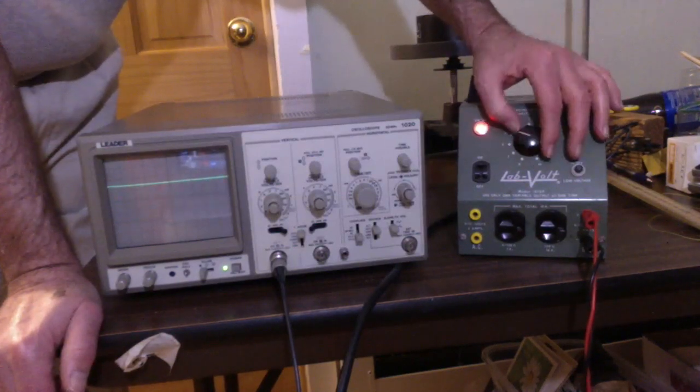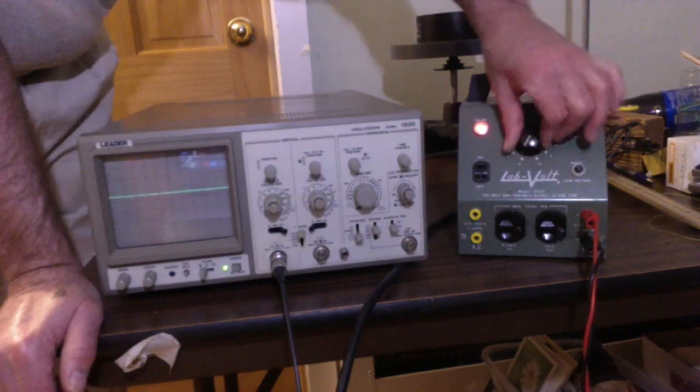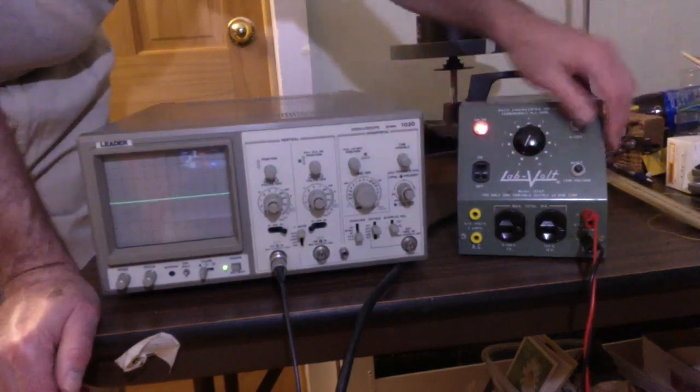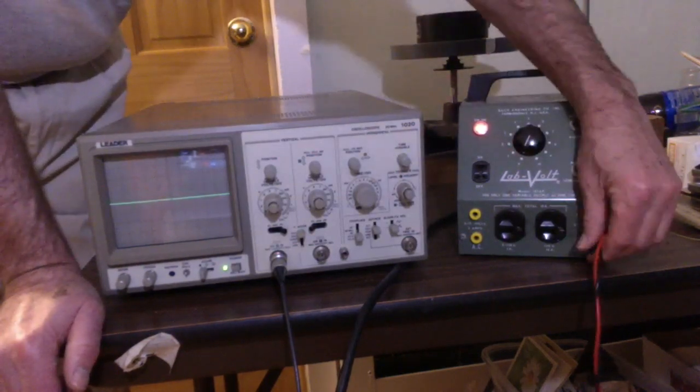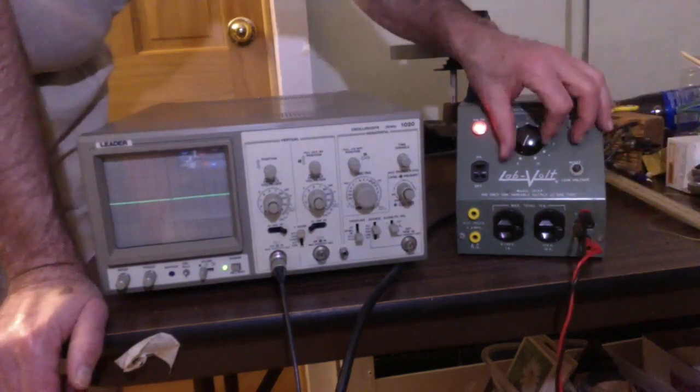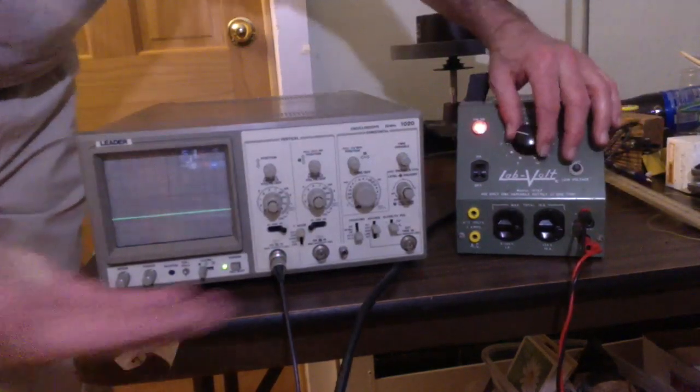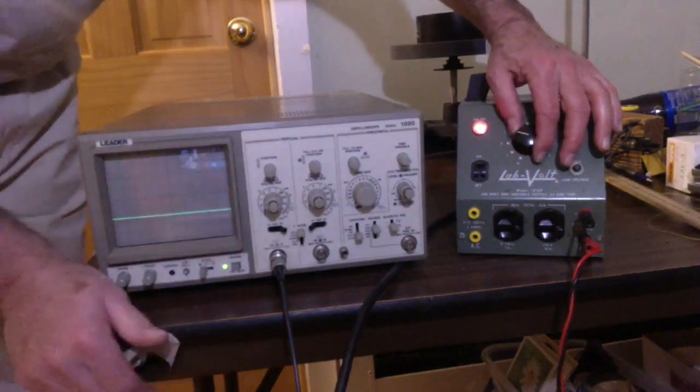I turn the knob up and the beam goes up. How do I get the beam to go down? Well, I can reverse the polarity on the power pack. Turn the voltage up, the beam's going down. The bottom plate is positive to bring the beam down.